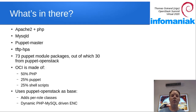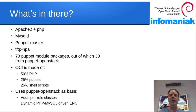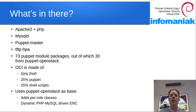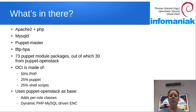So what's in there? I haven't shown you the dependencies — they were pre-installed because otherwise it takes too much time to display. In OCI you have dependencies for Apache plus PHP, MySQL, PuppetMaster, TFTPHPA, 73 Puppet packages, out of which 30 are Puppet OpenStack, plus some PHP, Puppet, and shell scripts from OCI itself. OCI uses Puppet OpenStack upstream as a base and then adds a pair of role classes and a dynamic PHP MySQL-driven ENC.